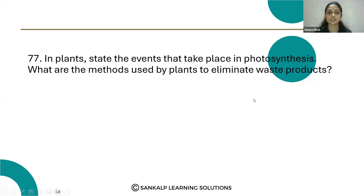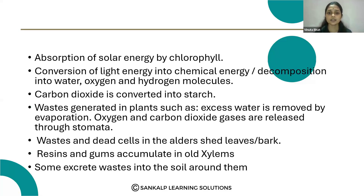Next, the second question: What are the methods used by plants to eliminate waste products? Plants also eliminate waste products, but they don't have a dedicated system. They use different methods. Excess water is removed by evaporation, and oxygen and carbon dioxide gases are released through the stomata.